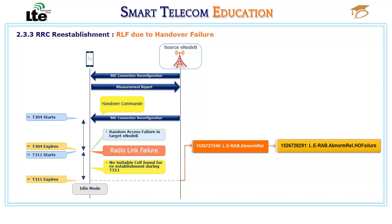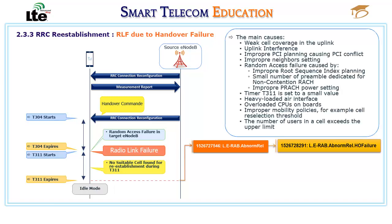The main causes for a handover failure — random access failure and expiration of the T311 timer — are: weak cell coverage in the uplink, uplink interference, improper PCI planning causing PCI conflict, improper neighbor settings, random access failure caused by improper root sequence index planning, small number of preambles dedicated for non-contention RACH, improper PRACH power settings, T311 timer set to a small value, heavy loaded air interface, and overloaded CPUs on boards.